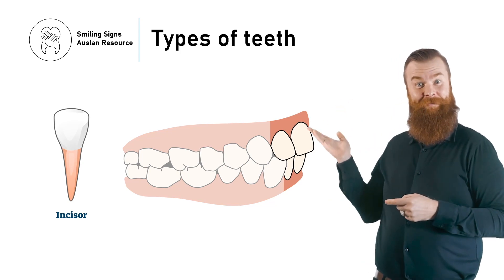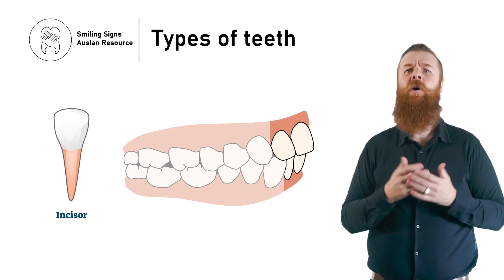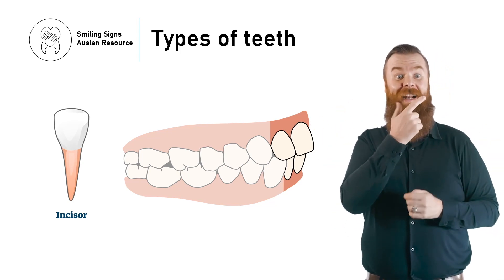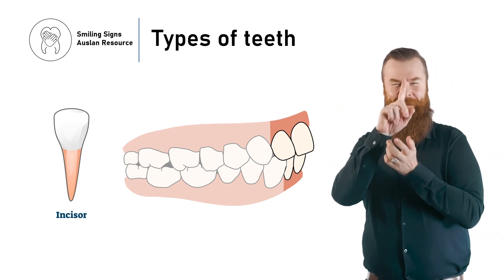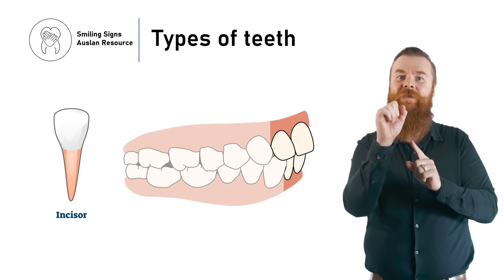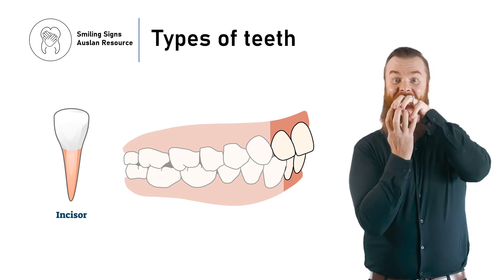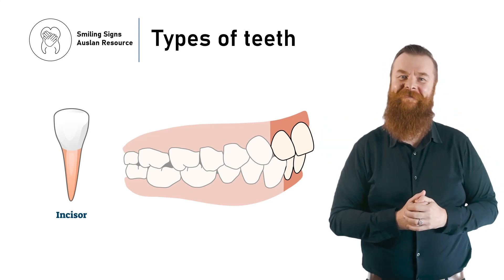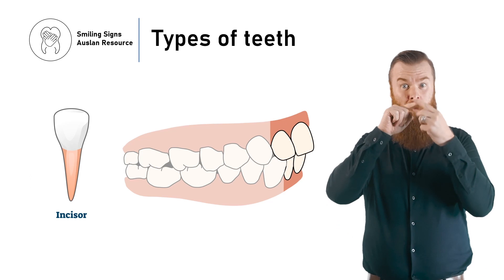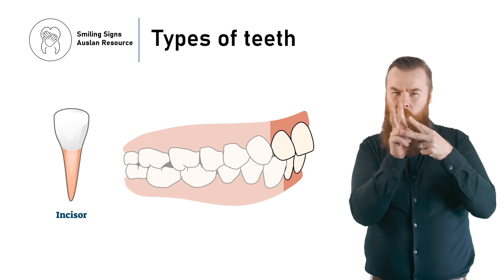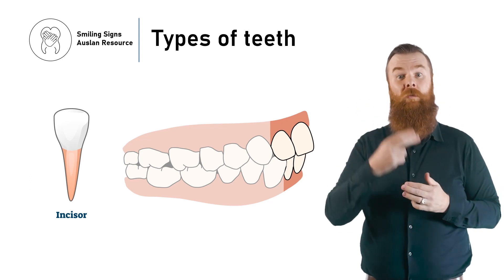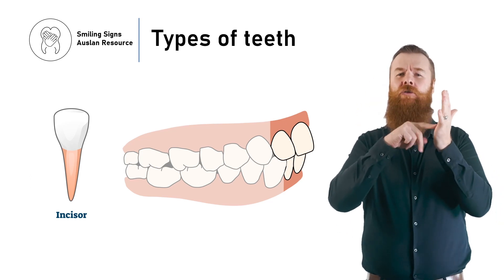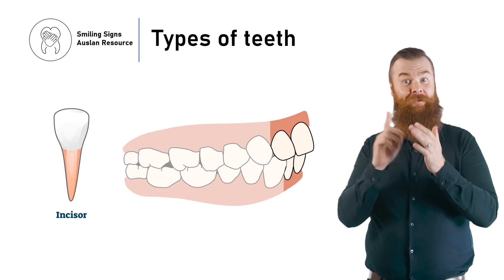Incisors are the front four teeth on the upper and lower jaws. They are the most visible teeth when smiling. The teeth in the middle are called central incisors, and next to them are the lateral incisors.